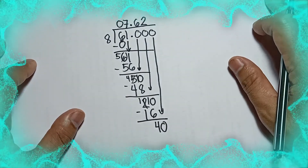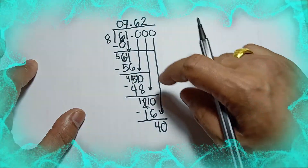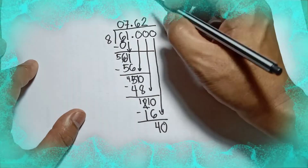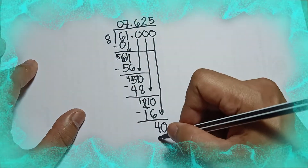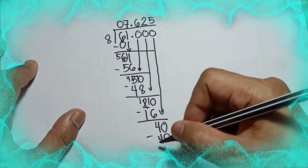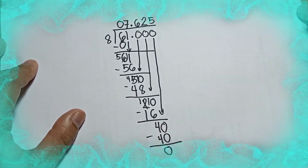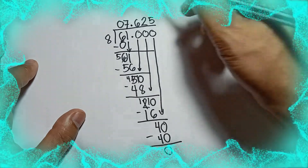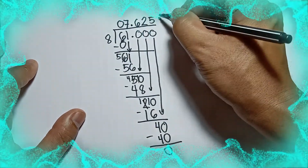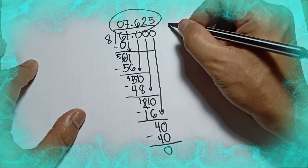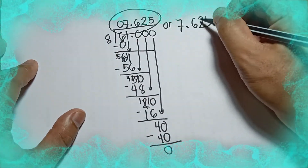So how many 8s can you make from 20? We can make 2. 2 times 8 is 16, and 20 minus 16 is 4. Bring down 0, so how many 8s can you make from 40? We can make five 8s. 5 times 8 is 40, and 40 minus 40 is 0. So the answer when you divide 61.000 by 8 is 7.625.